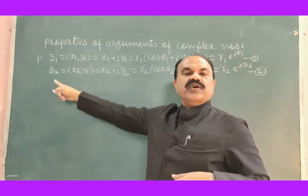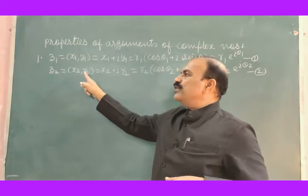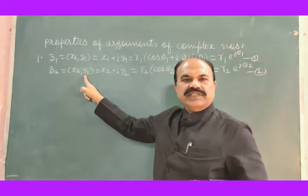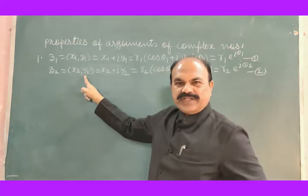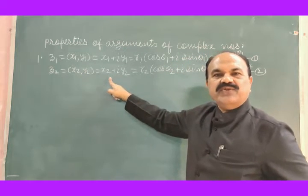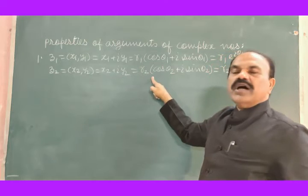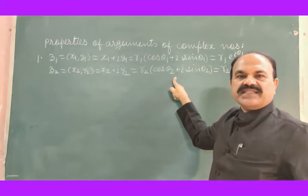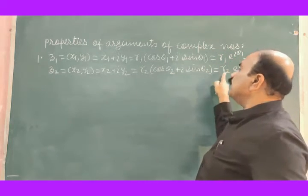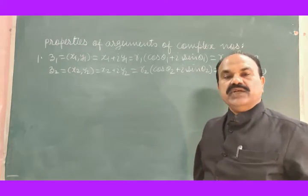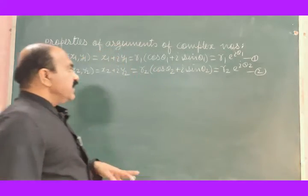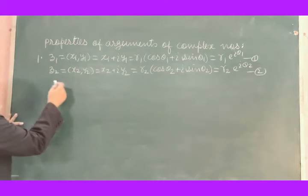Second complex number Z2 is equal to X2 plus iY2 in rectangular form, R2 into cos θ2 plus i sine θ2 in polar form, equal to R2 e to the power iθ2 in exponential form. Now let us take the product of these two.